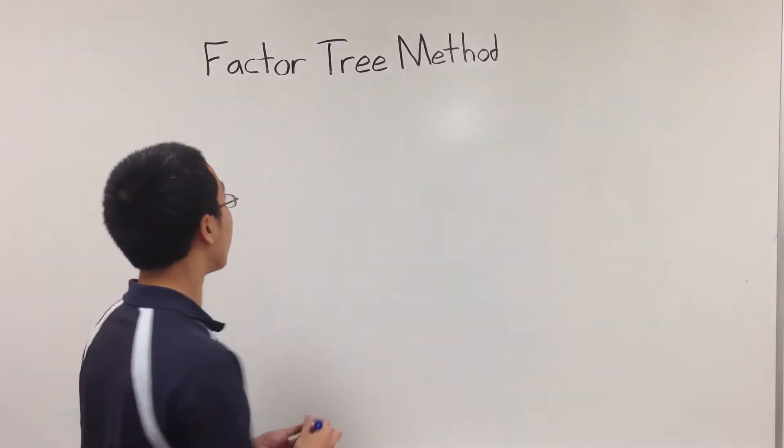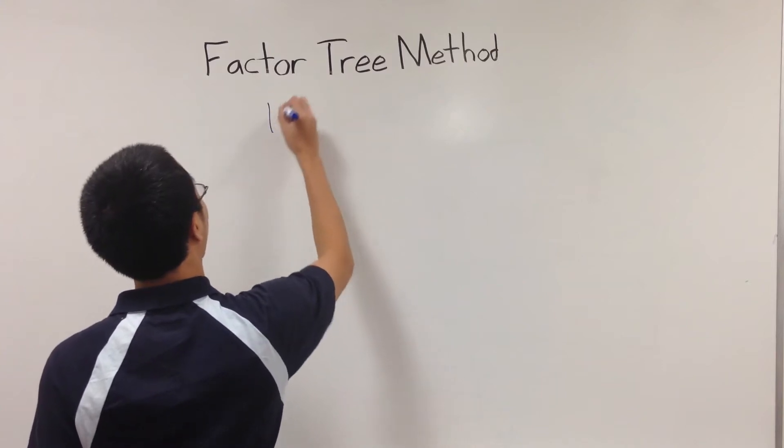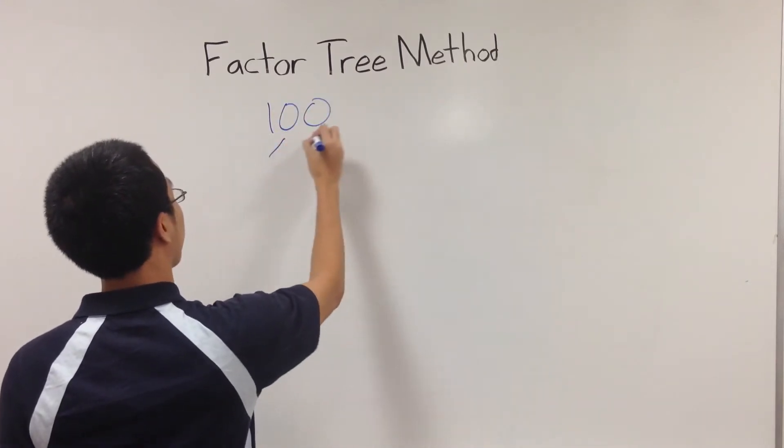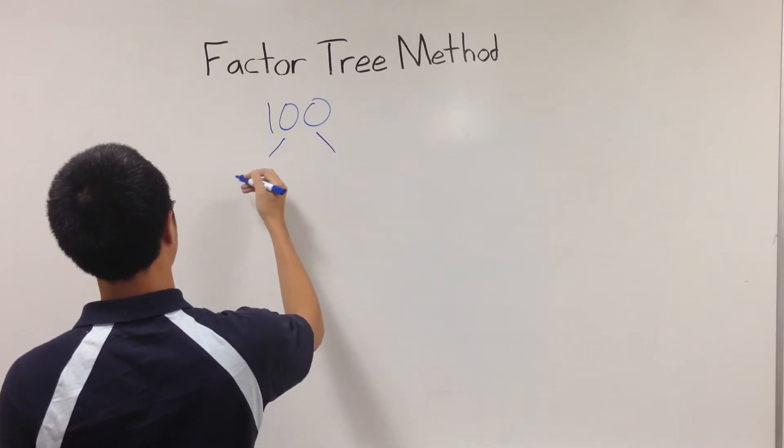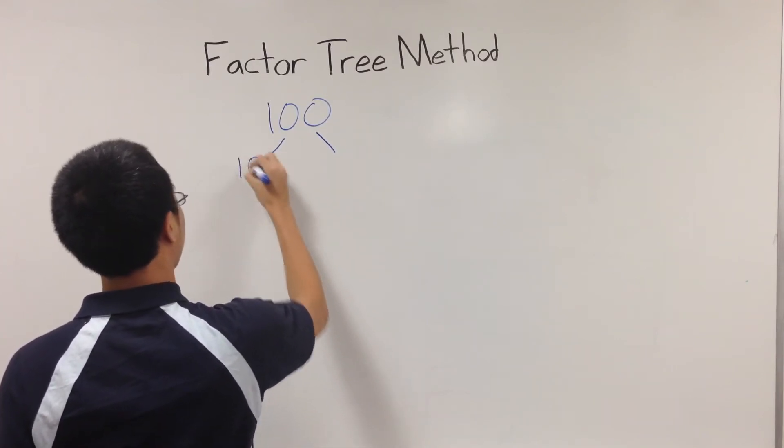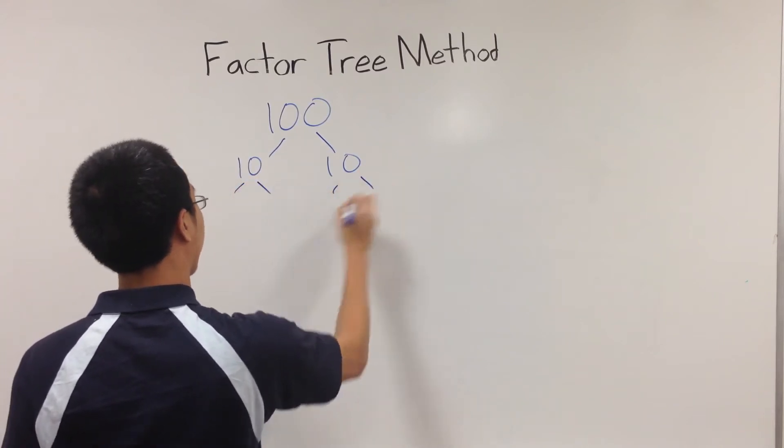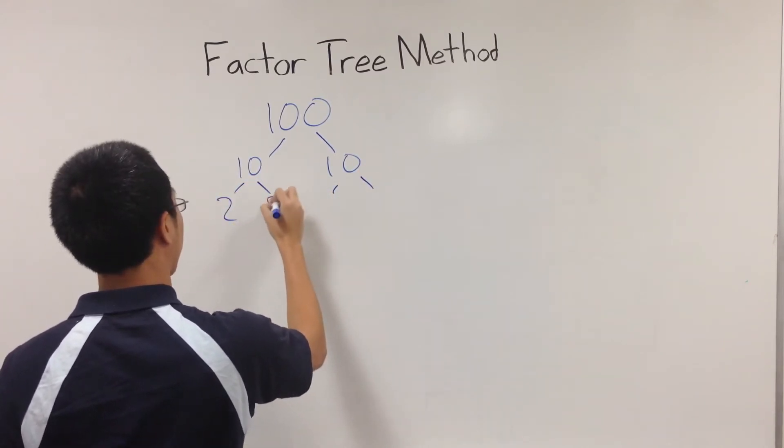First off, let's try it with 100. By making a factor tree, you split down the 100 into smaller factors of it, like 10 and 10, then you split them down even further until you get to the smallest number possible.